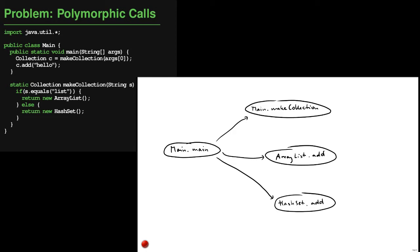Let's look back at the example from the first video. We had a method called makeCollection that creates a collection and returns it, and on this return value the code calls the add method. A clever static analysis might find that this call can only go to ArrayList.add or HashSet.add, but a more naive algorithm like class hierarchy analysis doesn't really know this. All it does is look at the statically declared type of the base object, which is c in this example, and this type is Collection. So it looks at all implementations of the Collection interface, and each implementation that provides an add method is a possible target for the call to c.add.